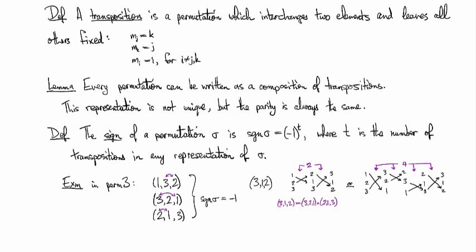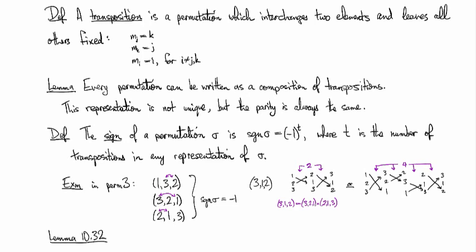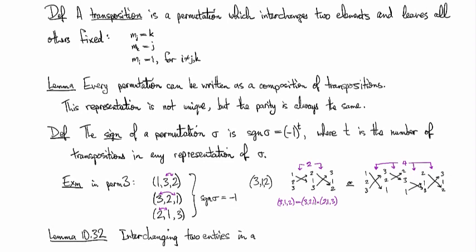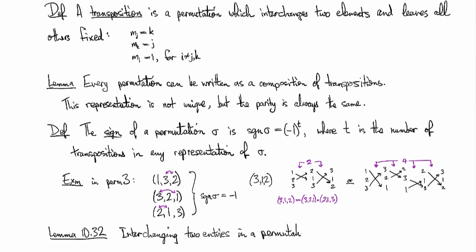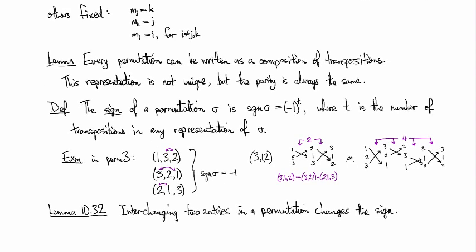Then we have what the book calls Theorem 1032: interchanging two entries in a permutation changes the sign. The book uses a slightly different definition of what a permutation is and what the sign is, which I find rather opaque. This is a clearer way to see it, and it makes the proof of this theorem easier. If you interchange two entries, you take whatever the sign of your permutation is and do one more transposition — so you add 1 to the exponent — giving you minus one times the sign, and then you're done.